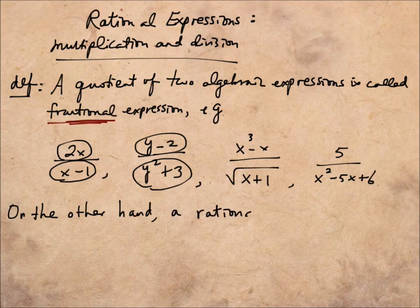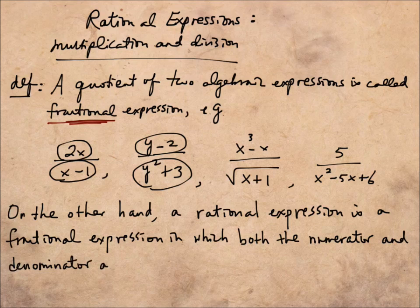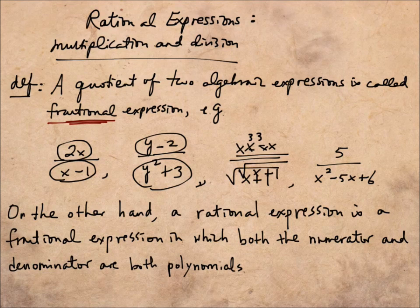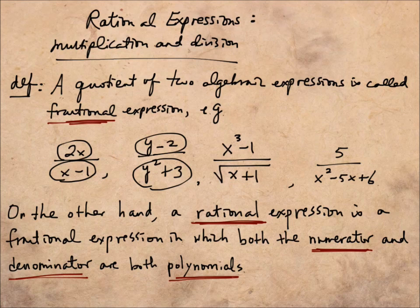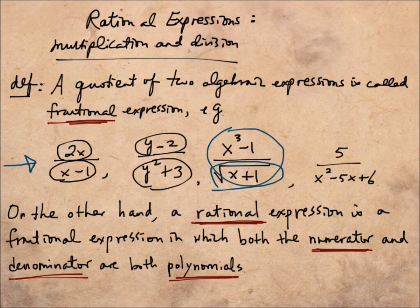A rational expression is a fractional expression in which both the numerator and the denominator are polynomials. The difference is that in a rational expression, both the numerator and the denominator are polynomial functions. With this definition in mind, the third example — x cubed minus x divided by square root of x plus 1 — is not a rational expression, because square root of x plus 1 is not a polynomial. We'll focus on techniques to simplify rational expressions, specifically multiplication and division, since we have systematic tools like factoring to simplify polynomials.